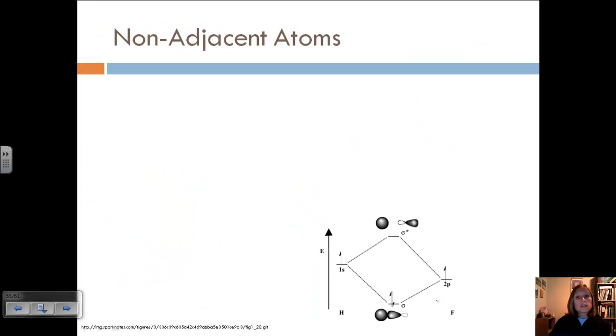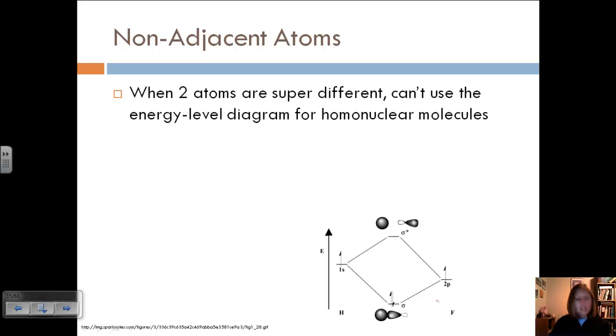So let's talk about heteronuclear diatomic molecules where the atoms are not adjacent. When two atoms are very different, we can't use the energy level diagram for homonuclear molecules anymore. It won't work. So let's look at an example. Let's look at hydrogen and fluorine put together. If we look at the valence electrons, we know that the valence electrons from hydrogen will come from the 1S, and we know that the valence electrons from fluorine are going to come from the 2P. And even though we've got five valence electrons from the 2P, we're going to just look at the ones that we would assume are going to bond with the hydrogen.